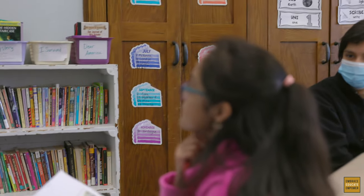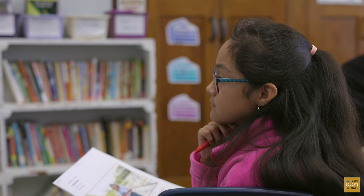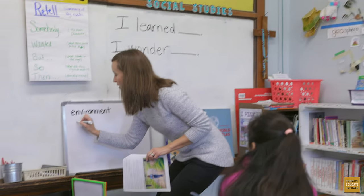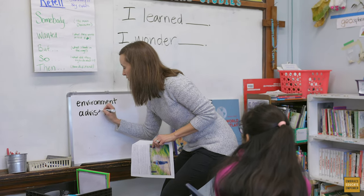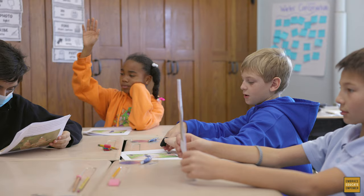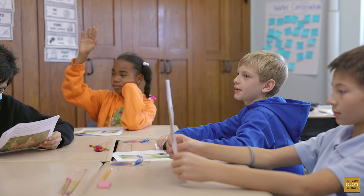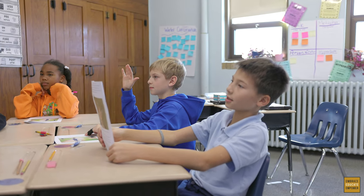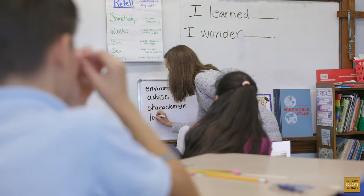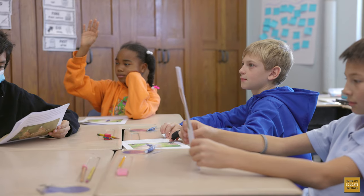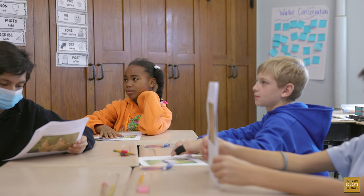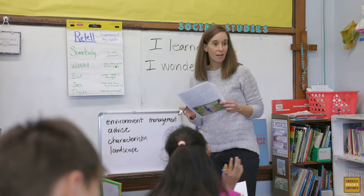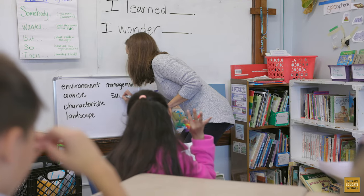Environment. Environment — very important when we're talking about biology. It's a great one to use. What other words? Advise. Advise. Why was that word important? Who gave her some advice? Who advised her about her career? Her dad tells her — he kind of directs her. Very good. Characteristics and landscape. Very good. What other words? Management. Management. Very good, that's an important one related to her career. Any others? Surveys. Surveys — because she surveys the birds. Very good. This is an excellent list of big academic words. I'm so proud of you for coming up with that list.